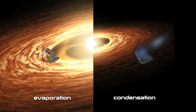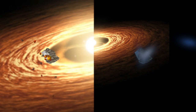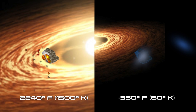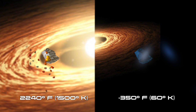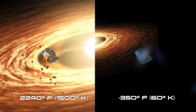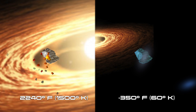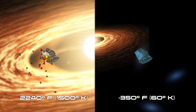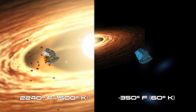Isotopes are different varieties of the same element. Temperatures ranged from a frigid minus 350 degrees Fahrenheit, or 60 degrees Kelvin, in the outer regions to a scorching 2240 degrees Fahrenheit, or 1500 degrees Kelvin, near the center.